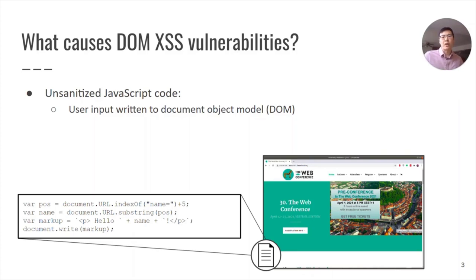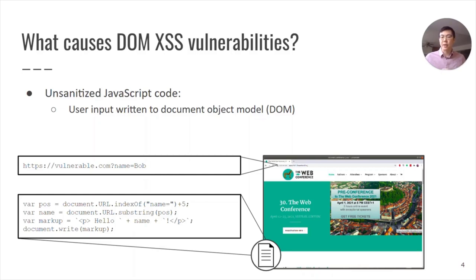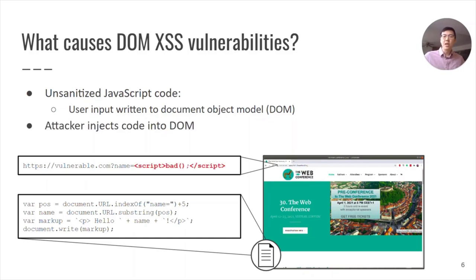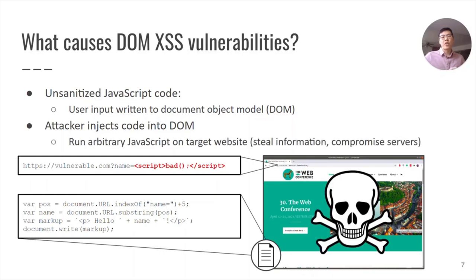Consider this example where a website takes, as a parameter, the name from the URL bar, and writes it directly to the DOM in a welcome message, saying hello, Bob. A more malicious user could take this same code and instead provide input that directly injects code into the DOM. When this input is written to the DOM, arbitrary JavaScript is executed, allowing the attacker to steal information or compromise the web server in other ways.